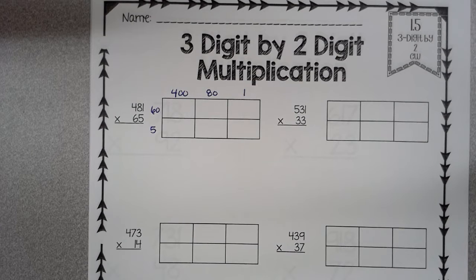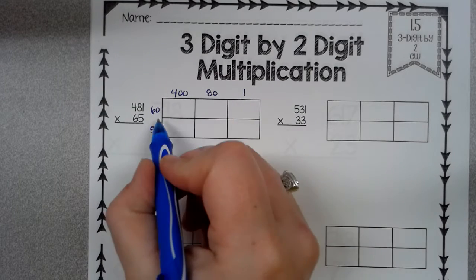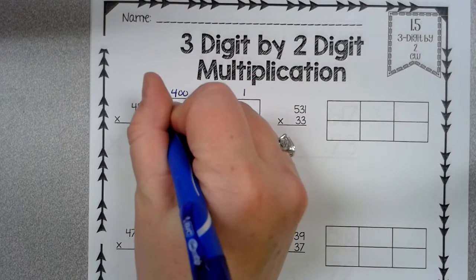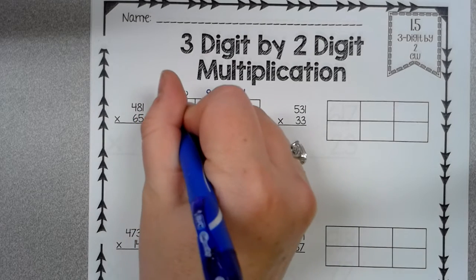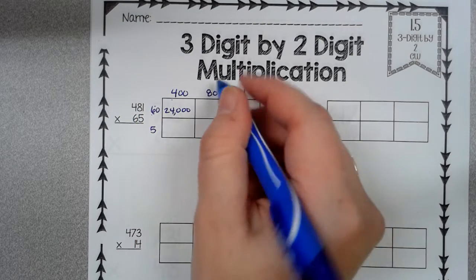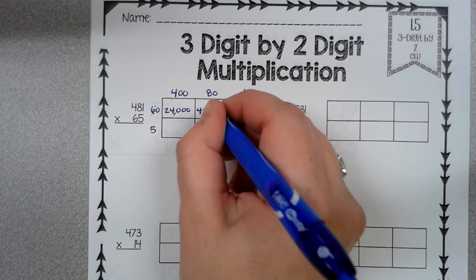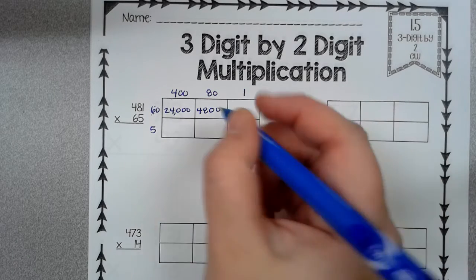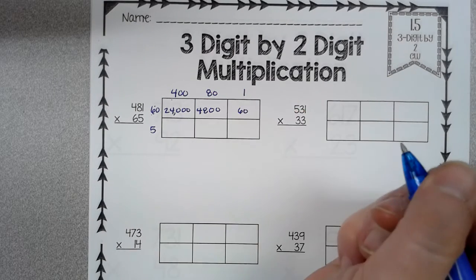So now all we have to do is multiply. 6 times 4 is 24, and then 3 zeros. 6 times 8 is 48 with 2 zeros. 60 times 1 is 60.